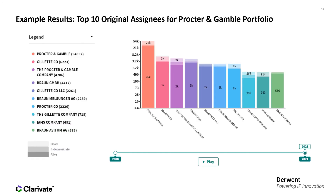This graph shows an example of what the results of that combined search can look like. It demonstrates the power of the Corporate Tree when used as part of a search strategy on Derwent Innovation. You can see all of these many name variations listed here in the combined portfolio.